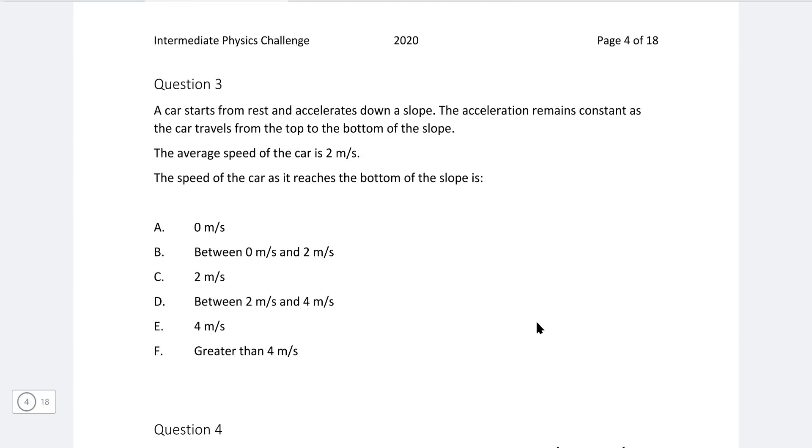Okay, question three: we have a car starts from rest and accelerates down a slope. The acceleration remains constant as the car travels from the top to the bottom of the slope. The average speed of the car is 2 meters per second. The speed of the car as it reaches the bottom of the slope is?